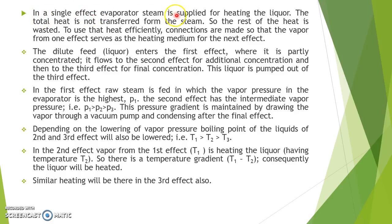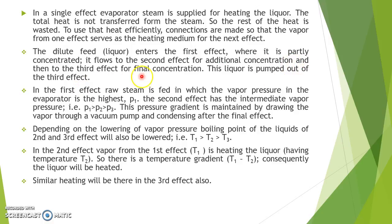In a single effect evaporator, steam is supplied for heating the liquor. The total heat is not transferred from the steam, so the rest of the heat is wasted. To use that heat efficiently, connections are made so that the vapor from one effect serves as the heating medium for the next effect. The dilute feed enters the first effect where it is partly concentrated, then flows to the second effect for additional concentration, and then to the third effect for final concentration. The liquor is pumped out of the third effect.